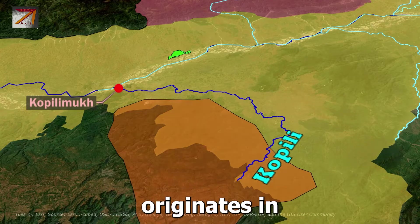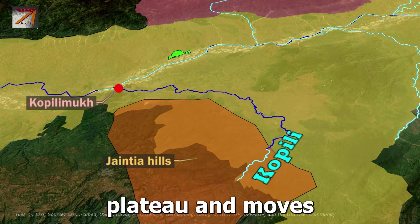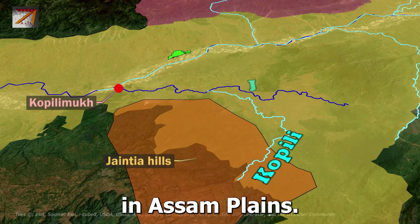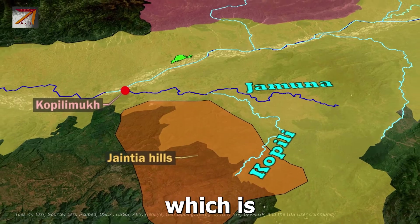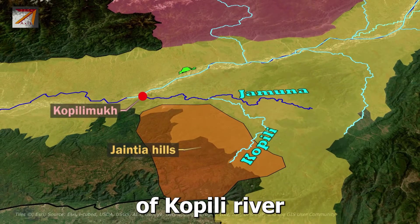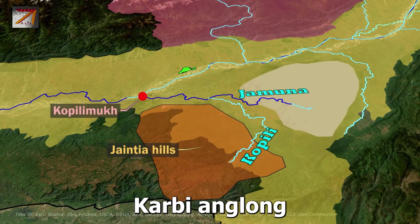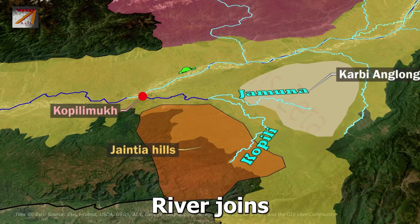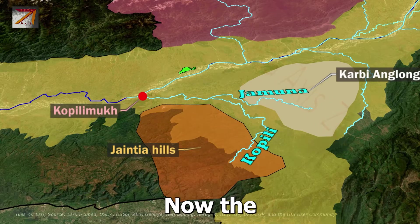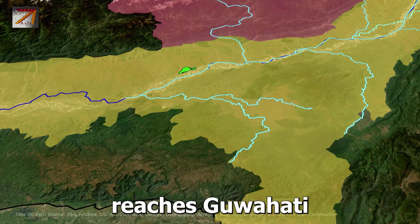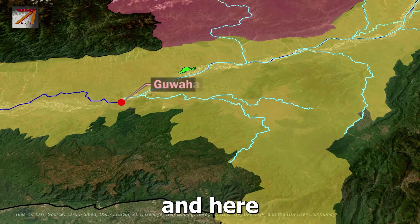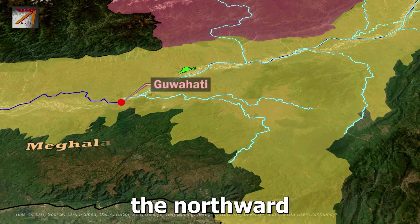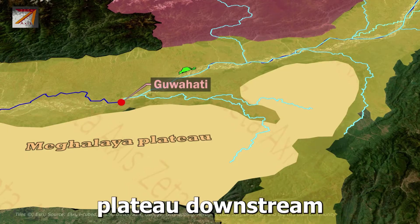The Kopili River originates in the Jaintia hills of Meghalaya and moves northward towards the Assam plains. In the Assam plains, the Jamuna River, a tributary of Kopili originating from Karbi Anglong, meets the Kopili. The Kopili joins Brahmaputra at Kopilimukh. The Brahmaputra then reaches Guwahati, where its width decreases due to the northward extension of the Shillong Plateau.